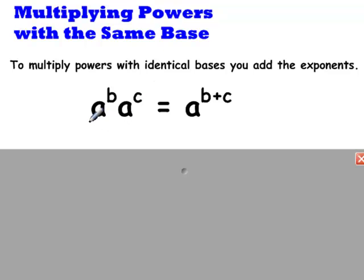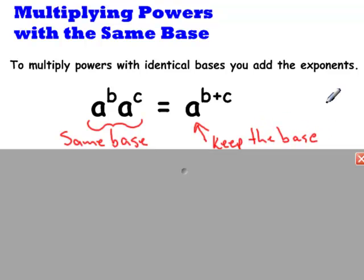Here you'll notice that a to the power b times a to the power c involves the same base, and we keep that base as our result. Then we simply take the exponents b and c and add them together.